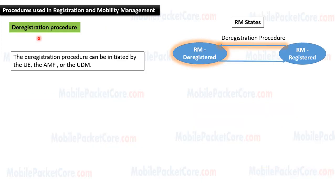Now let's learn the Deregistration Procedure. The Deregistration Procedure is used to move the UE from RM Registered State to RM Deregistered State. The Deregistration Procedure can be initiated by the UE, or by the AMF, or by the UDM.